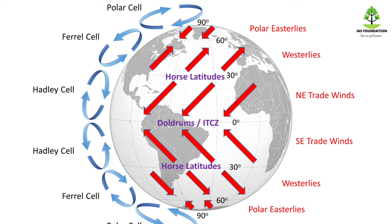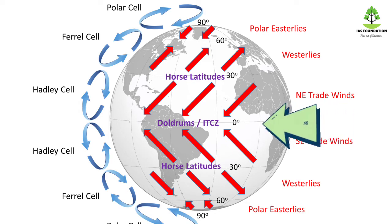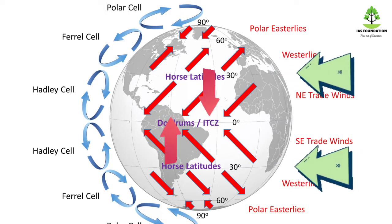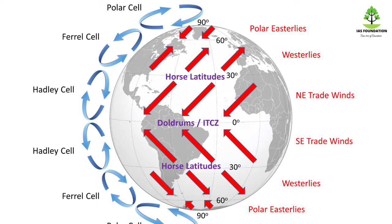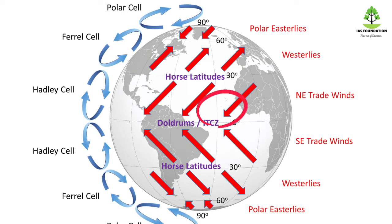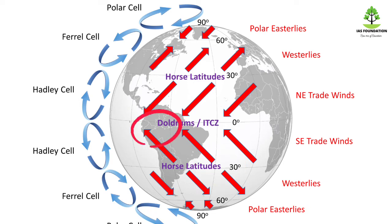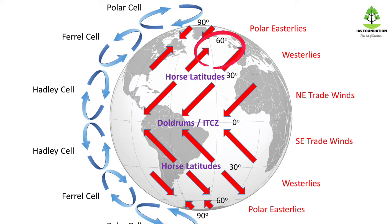In the equator, the low pressure belt is created. The high pressure area is located in the subtropical region. In the north hemisphere, the wind will deflect to the right side as it moves from high pressure. In the southern hemisphere, the wind from the high pressure area also deflects, moving toward the low pressure area.